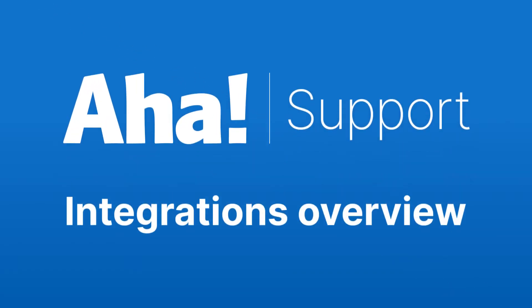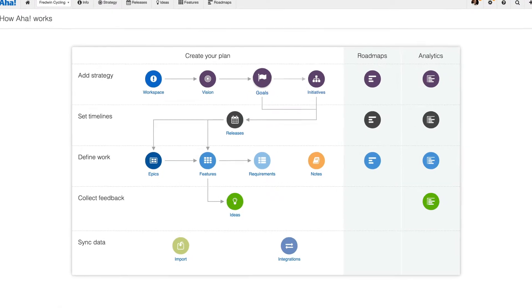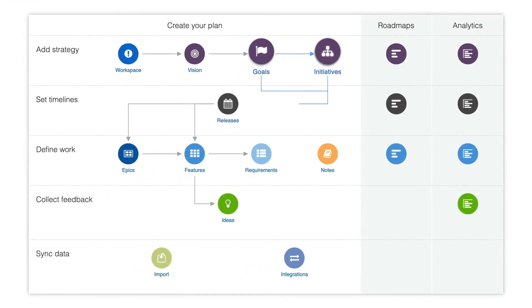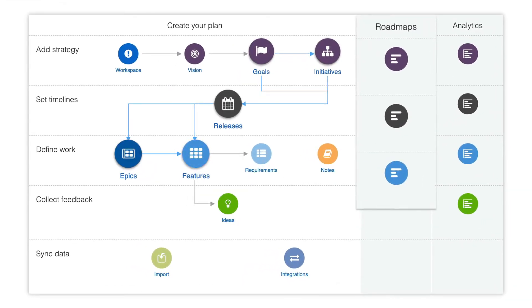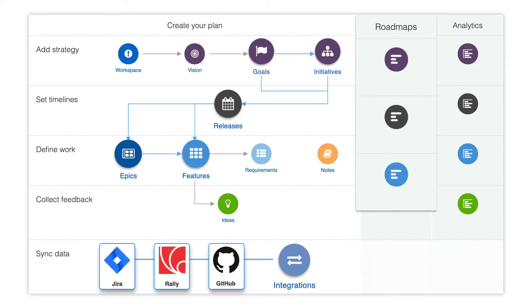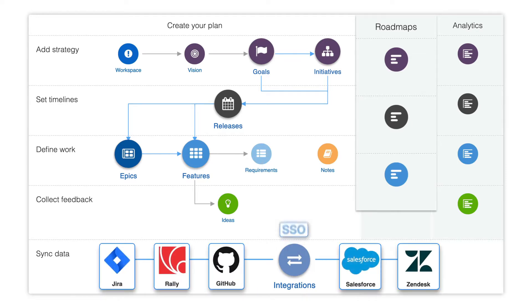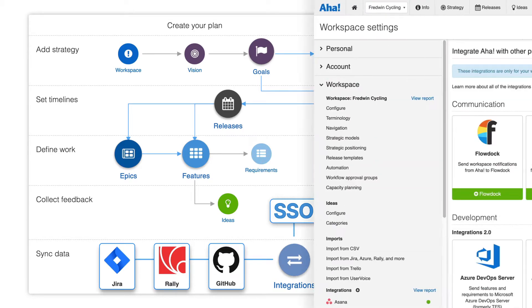Hi, this is Claire from AHA. Today we're going to talk about integrations. AHA is designed to help you set strategy, prioritize features, and share visual plans all in one place. And we know how important it is to connect your product plans with other tools, such as development applications, customer relationship management systems, and single sign-on solutions. AHA integrates directly with more than 30 tools, so you can keep information flowing seamlessly between teams. Now let's take a look at what you can do.